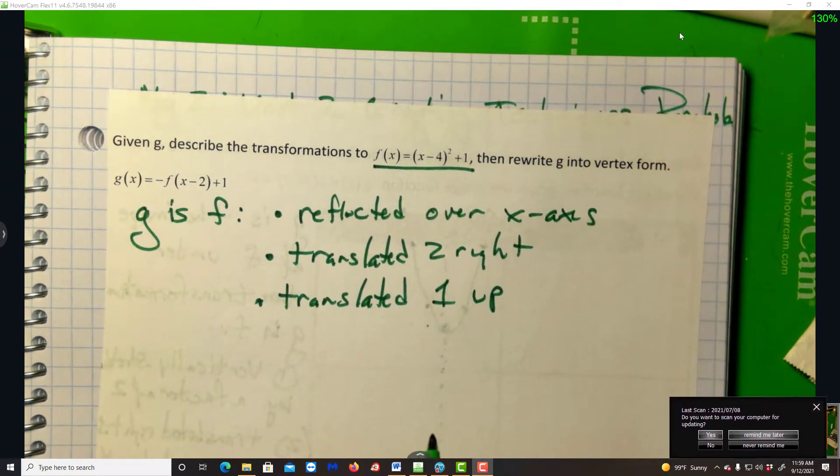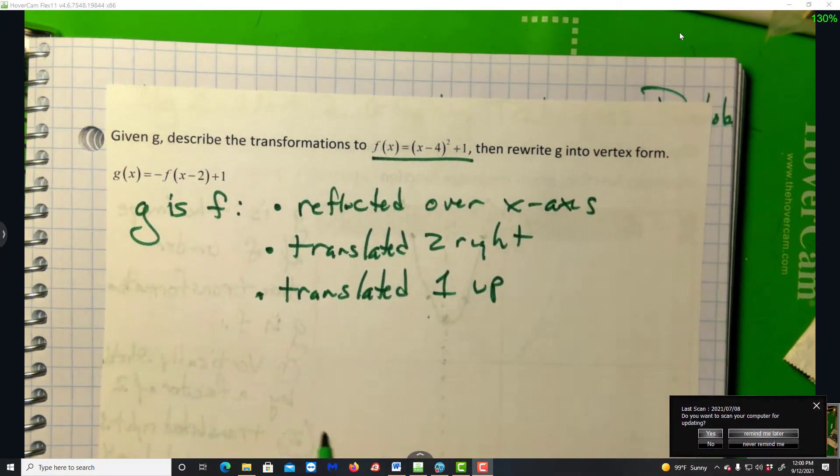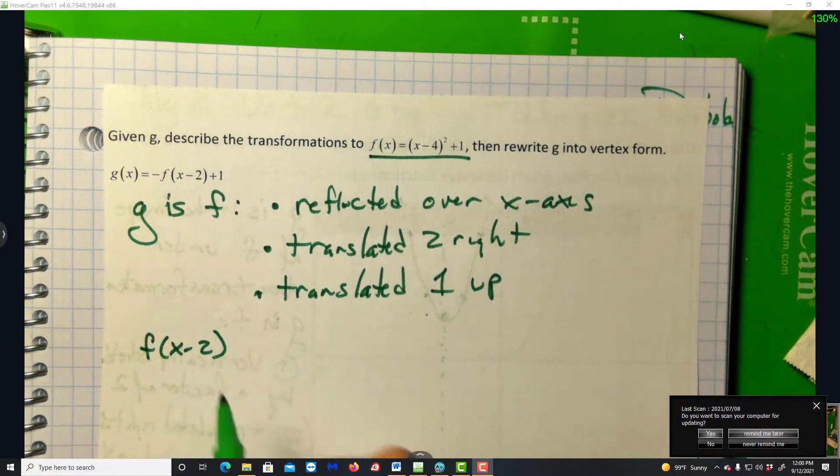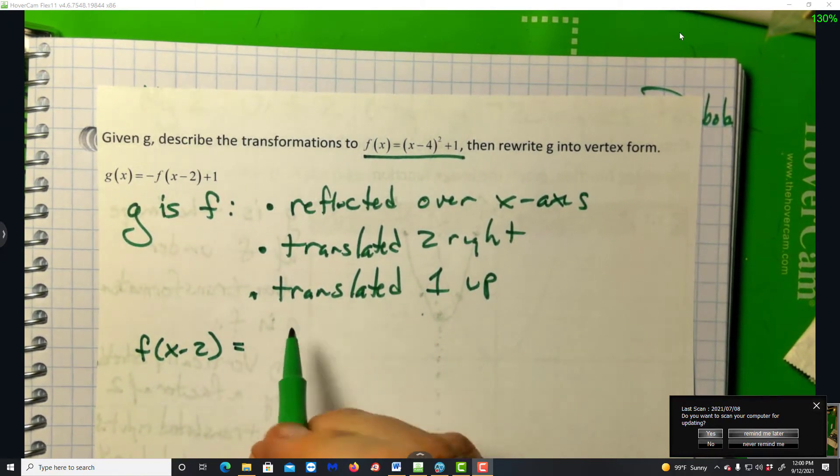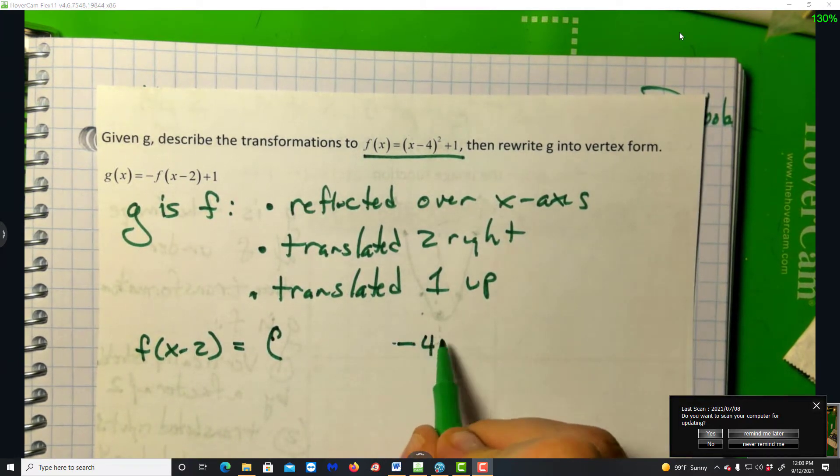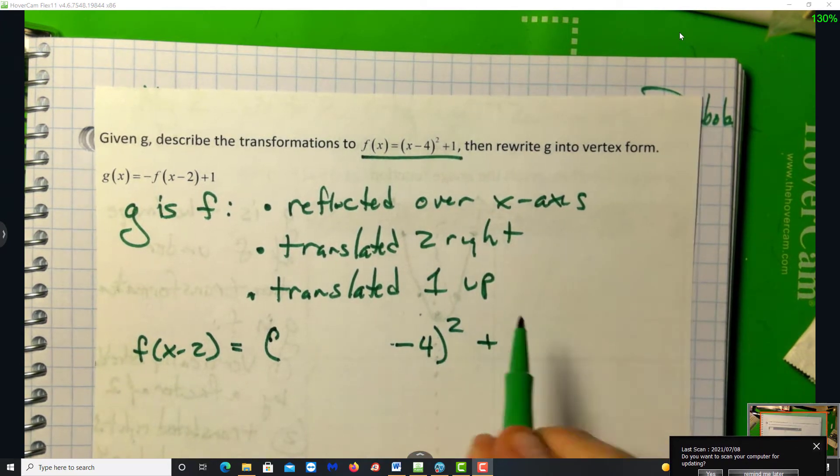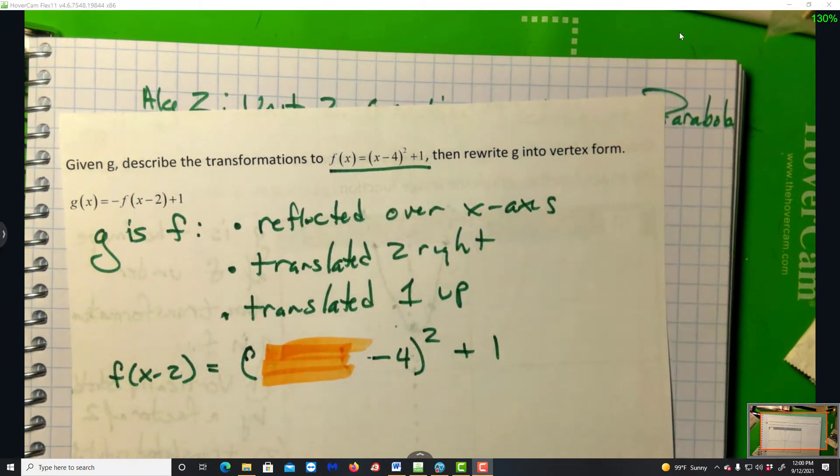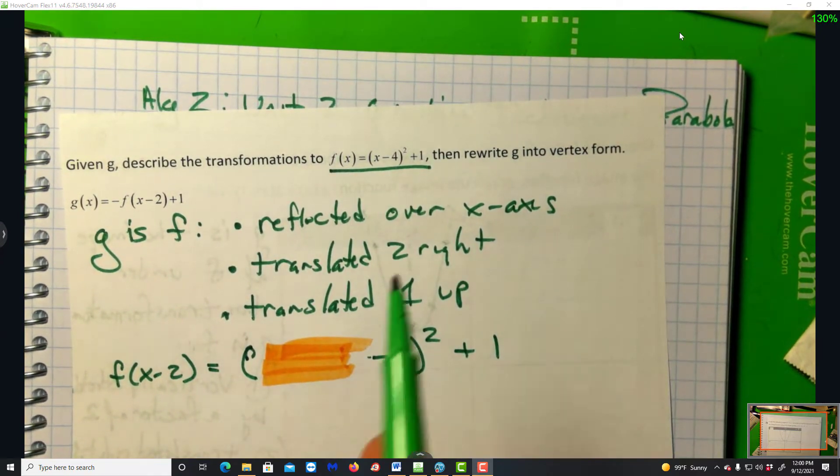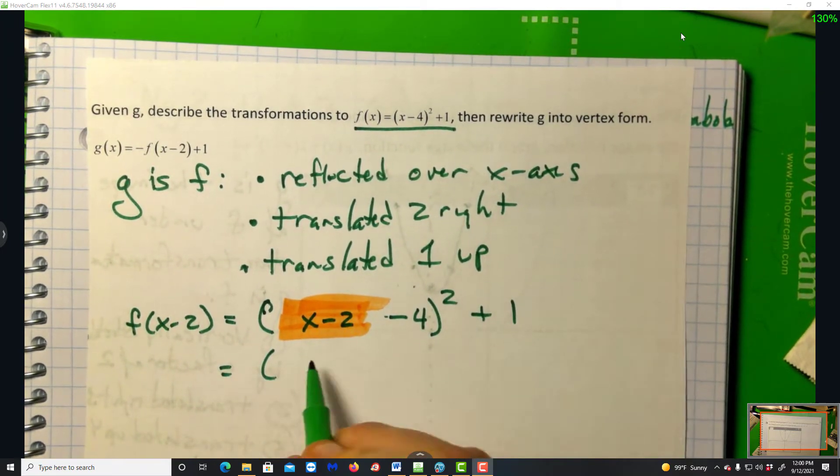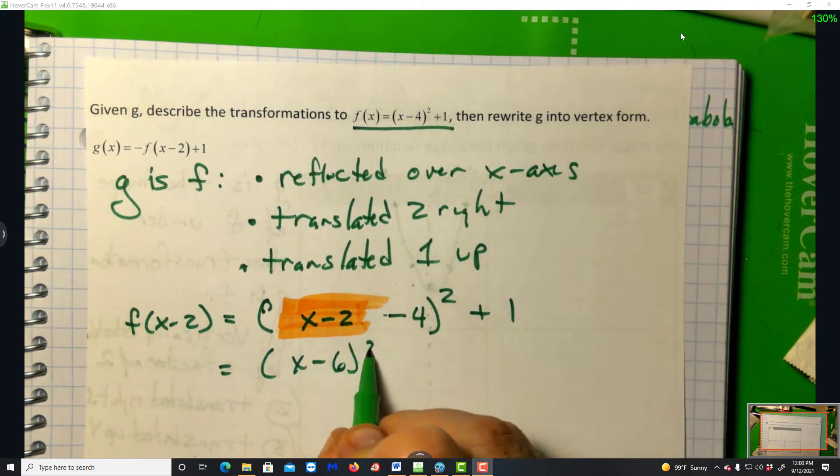A major skill, and students are struggling with this, is we want to rewrite this in vertex form. So I'm going to break this into steps. F of x minus 2. What does this mean? This means go into the rule for F and where you see an x-coordinate, replace it with x minus 2.